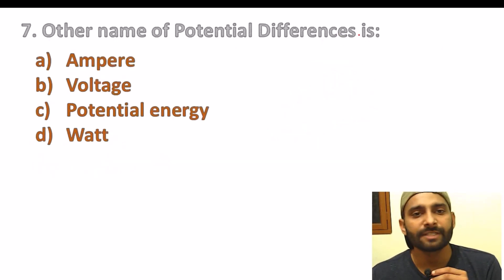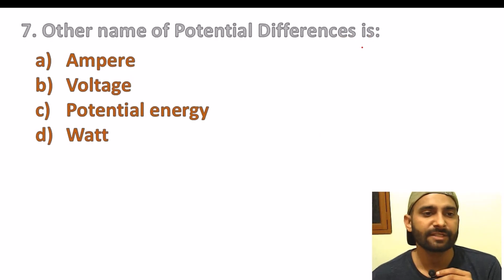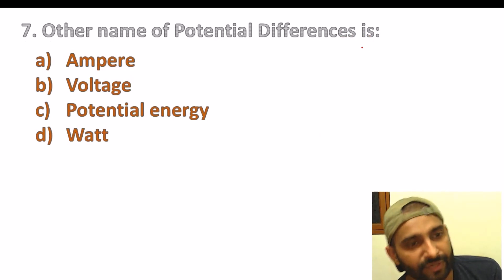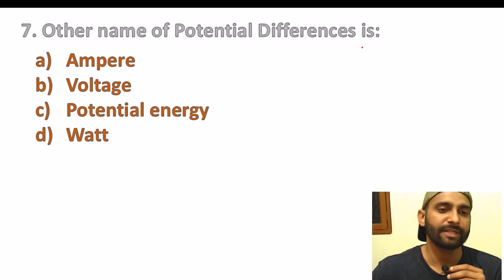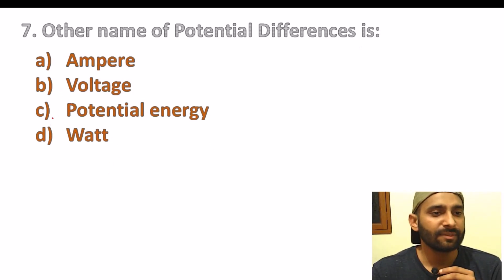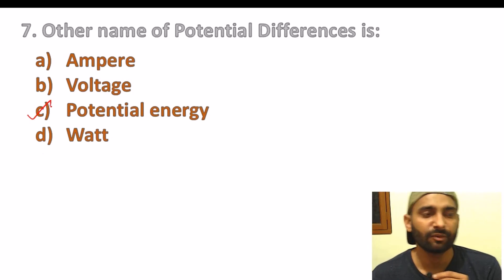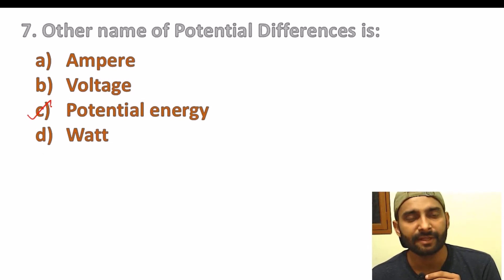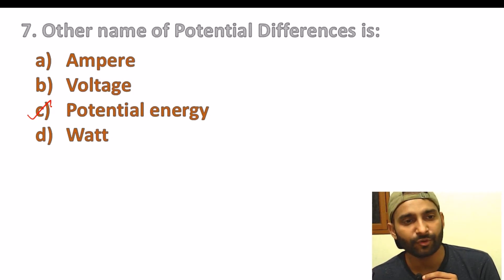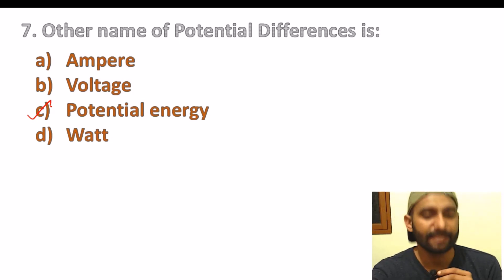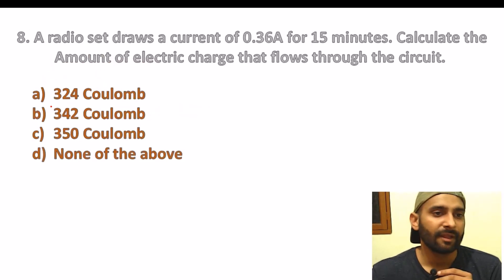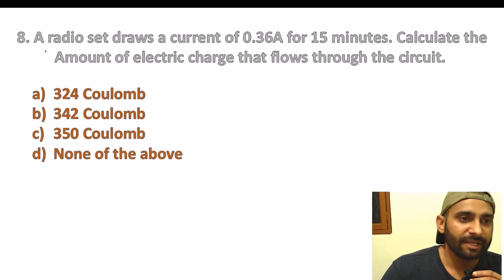The other name of potential difference is — what is another name for potential difference? That is potential energy. The other name for potential difference is potential energy — 'vibhantar urja' in Hindi — for Hindi-medium students.